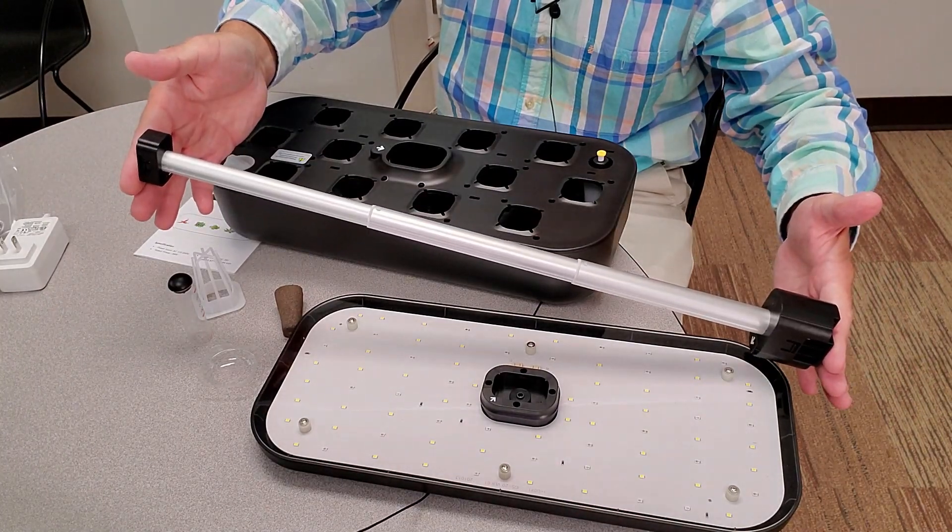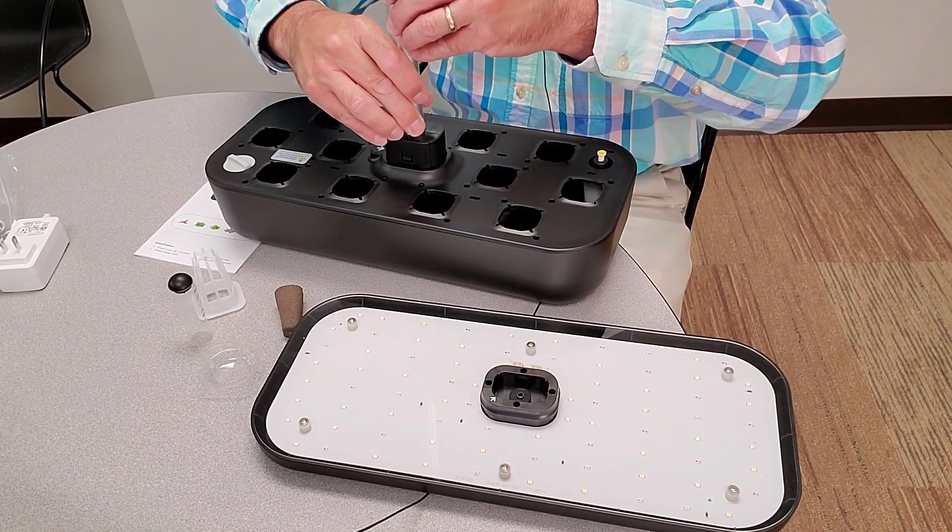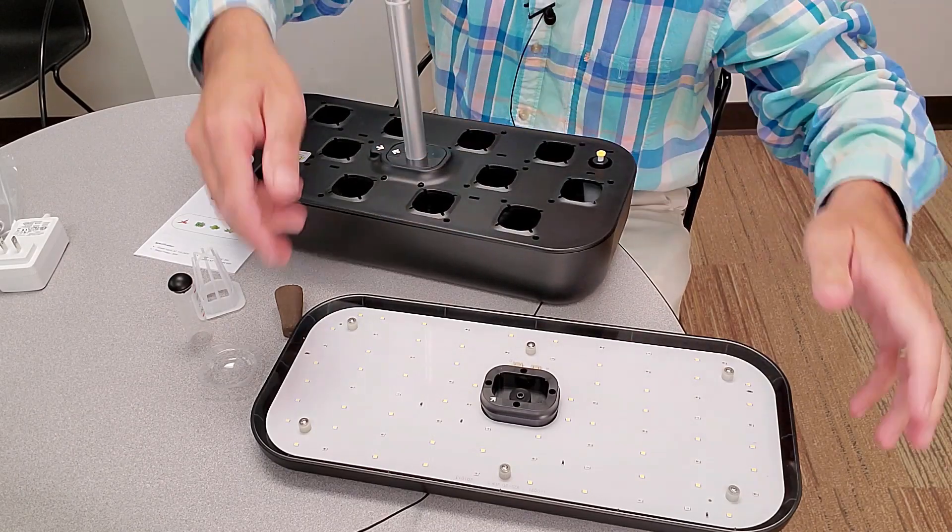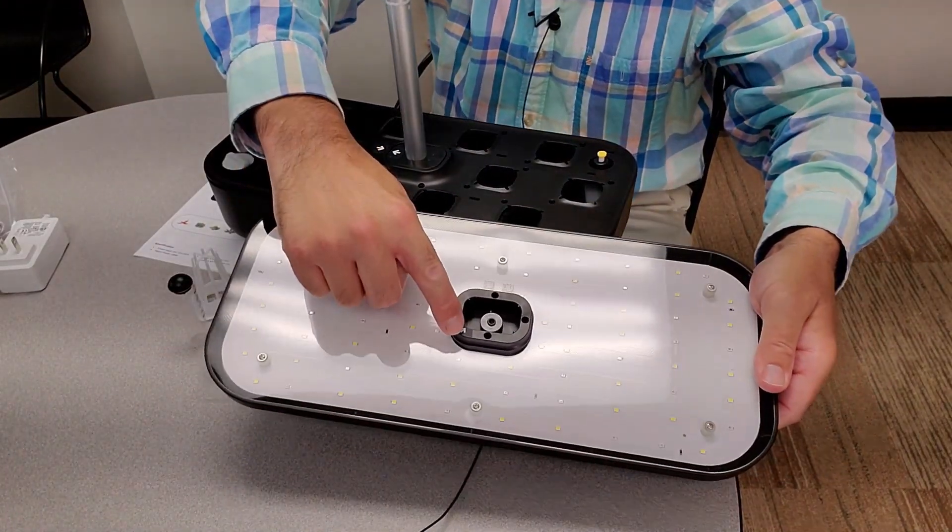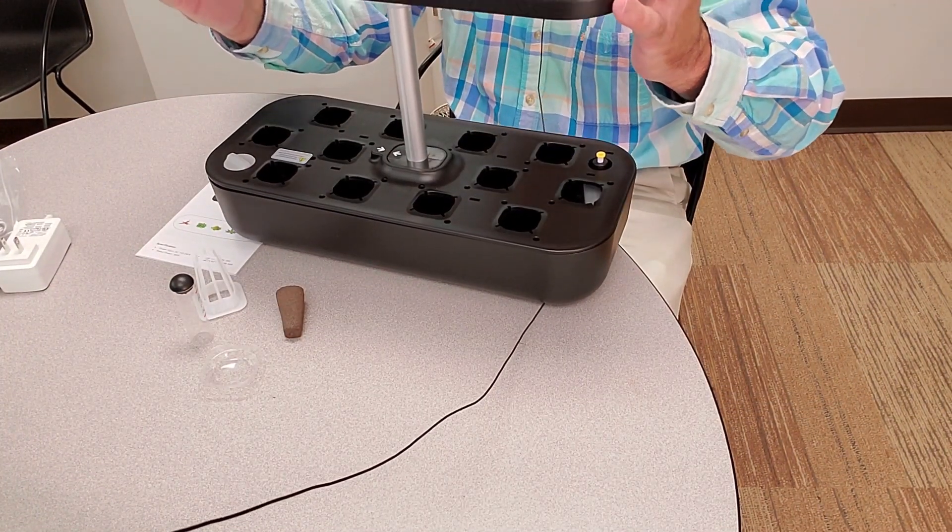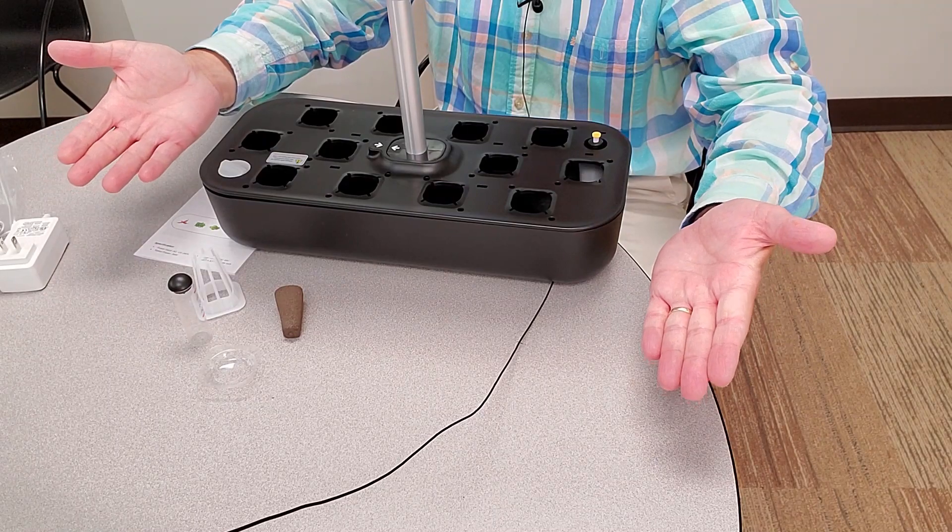So let's go ahead and put this together. We'll start by lining the arrows, inserting the light stand. I'll go ahead and compress that for right now. And then I'll align this arrow with the arrow on the side of the unit and pop that in place. And that's basically it.